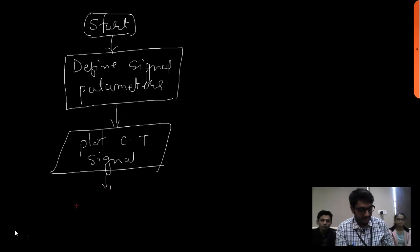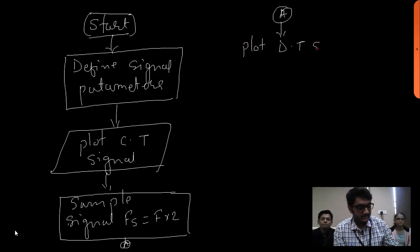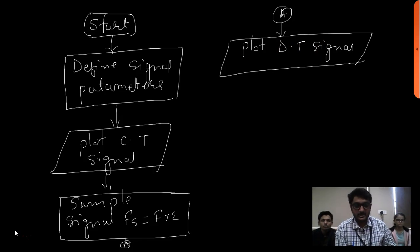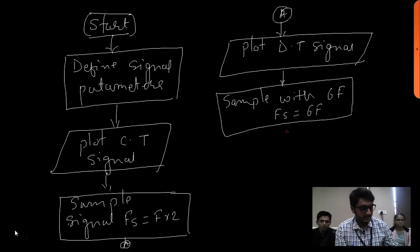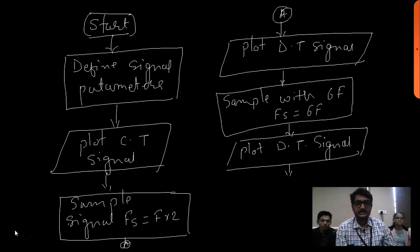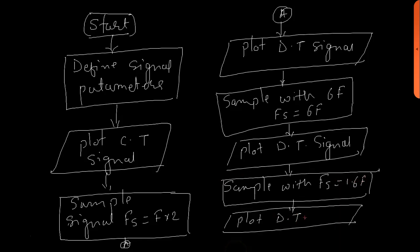First, we will sample a signal with Fs equal to the signal frequency. Once done, we plot the resulting discrete-time signal. For the second condition, sampling frequency greater than twice the signal frequency, we will use six times the signal frequency (Fs = 6F), and again plot the DT signal. For the third case, we sample with less than twice the signal frequency, using Fs = 1.6 times the signal frequency, and plot that DT signal.